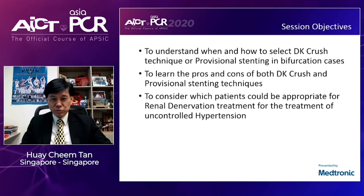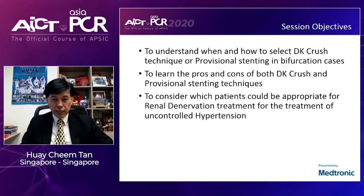The learning objectives for this afternoon session include: one, to understand when and how to select a DK CRUSH technique, which is a two-stent strategy versus provisional stenting in bifurcation cases; number two, to learn the pros and cons of both DK CRUSH and provisional stenting techniques; and finally, to consider which patients could be appropriate for renal denervation treatment for uncontrolled hypertension.